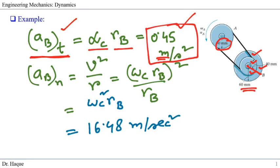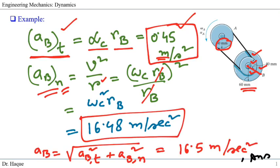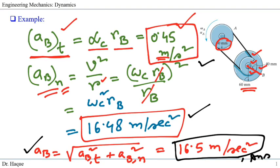There is also a normal component of acceleration, which can be found from V²/R, or equivalently ω² × R. Substituting V = ω_C × R_B, we get (ω_C × R_B)² / R_B = ω_C² × R_B. Plugging in the values gives the normal component as 16.48 m/s². Once we have both tangential and normal components, we take the square root of their sum of squares to get the magnitude of the total acceleration of point B, which is 16.5 m/s². That is our answer.